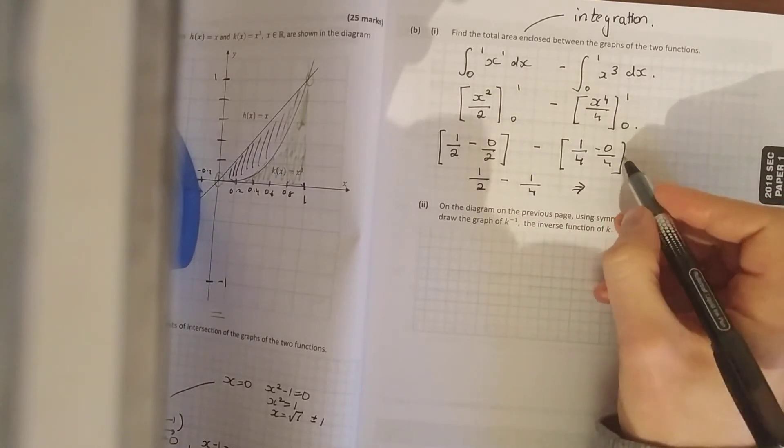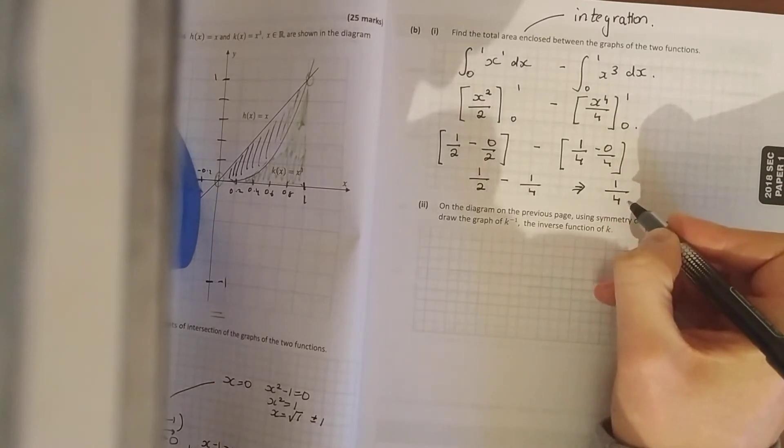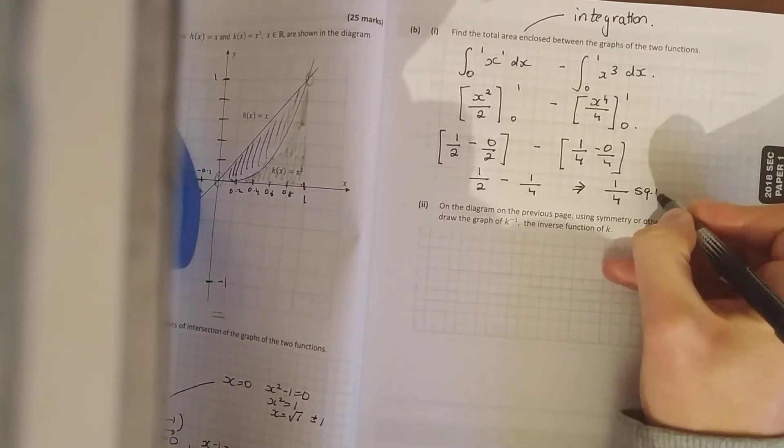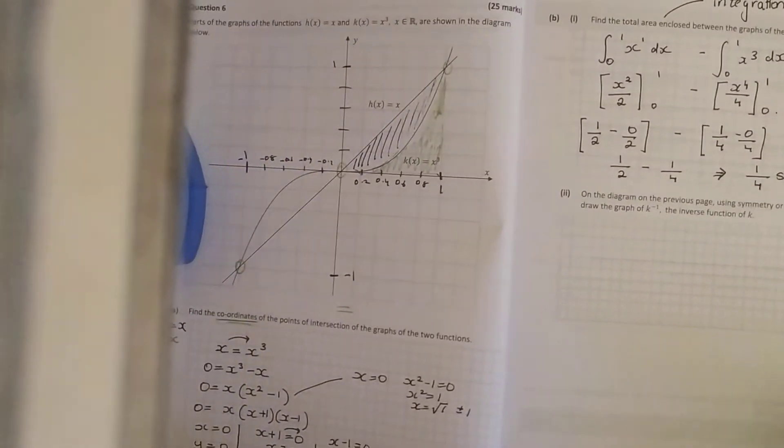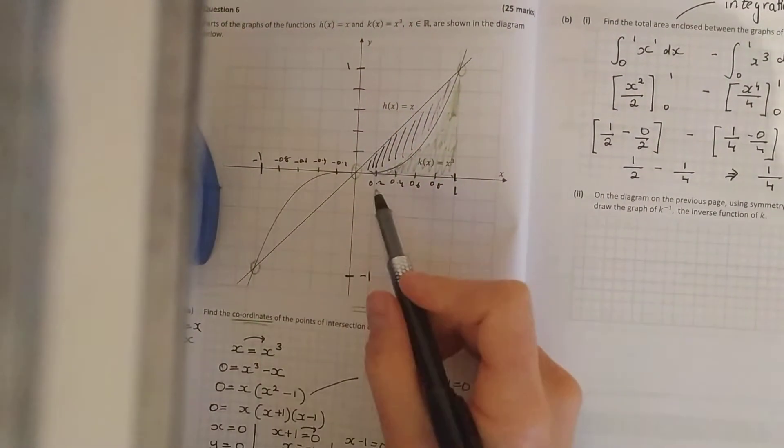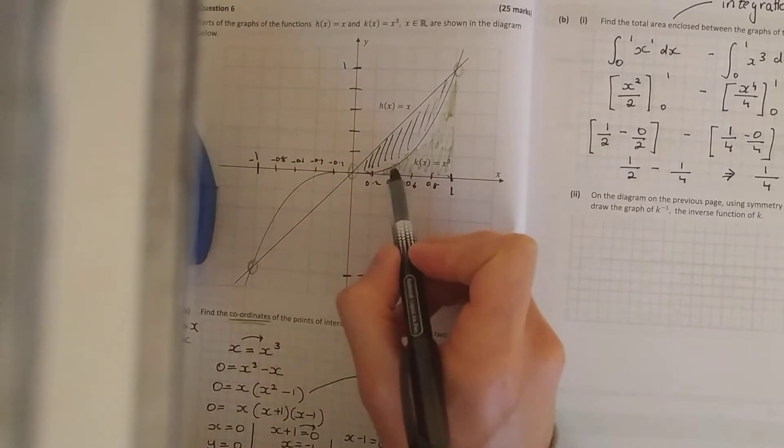So what you end up with is a half minus a quarter, which is just simply a half minus 0.5, which is a quarter square units. Now if you look, that's actually only this side of it.